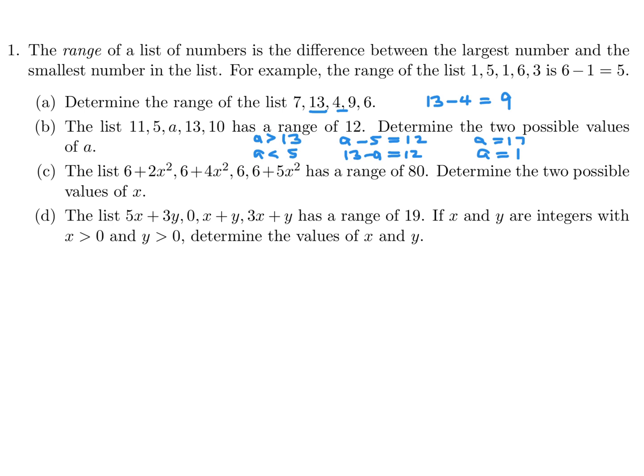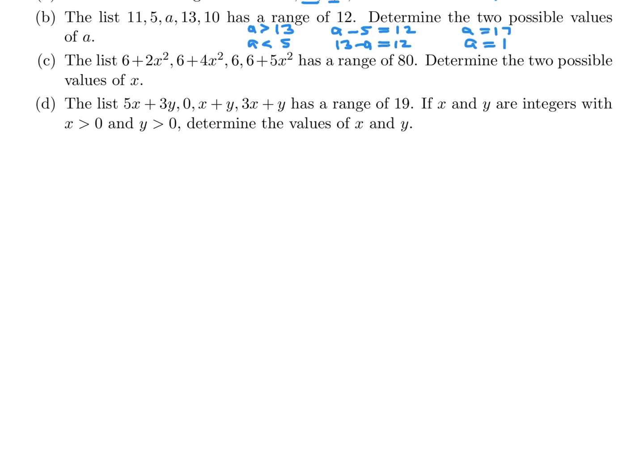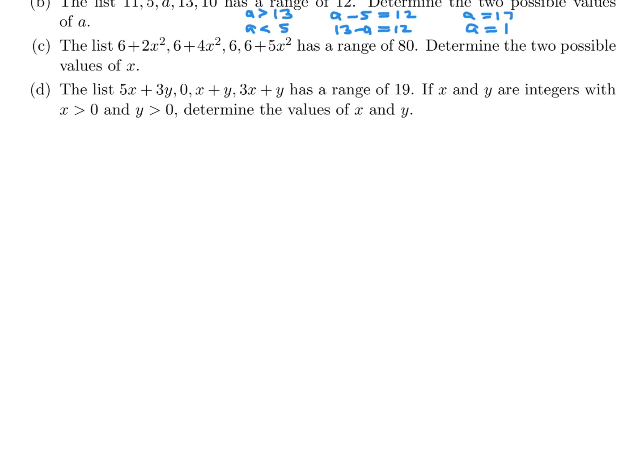The list 6 plus 2x squared, 6 plus 4x squared, 6, and 6 plus 5x squared has a range of 80 to determine the two possible values. Let me just list them in order, in terms of ascending order. We have 6 and then 6 plus 2x squared, because the x squareds are all positive, so this is only going to be increasing in value, 4x squared and then 5x squared.